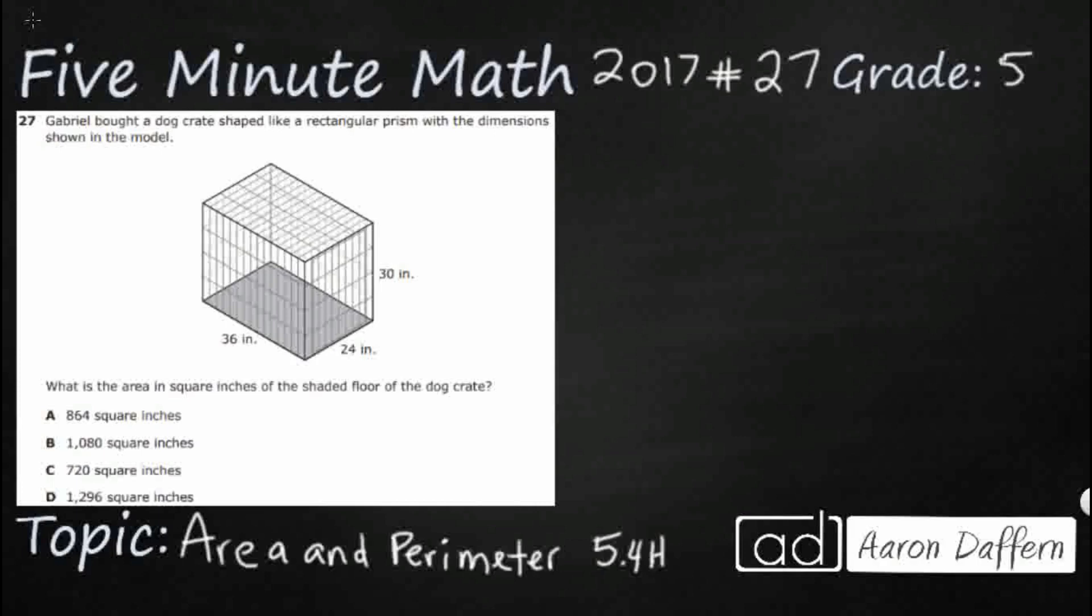So we have a dog crate shaped like a rectangular prism and we have the dimensions shown right here. So it looks like it's a pretty tall dog crate in order to fit that dog. So here is where the really tricky thing comes. Take a look at this question down here at the bottom. What is the area in square inches of the shaded floor of the dog crate?